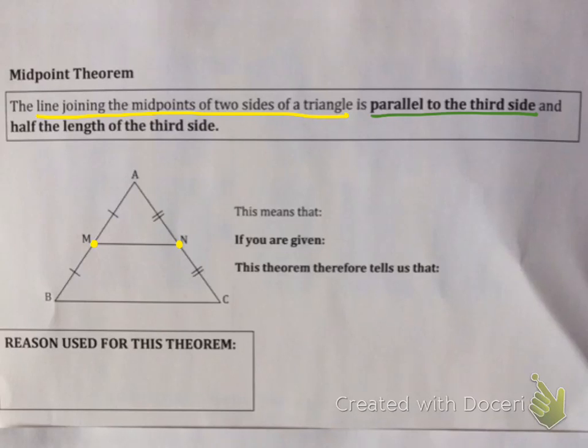In this case you know that therefore MN is parallel to the third side. So what this is saying is if you're given in a picture that M and N are midpoints, this theorem tells you that MN is parallel to BC. So those two lines have to be parallel.